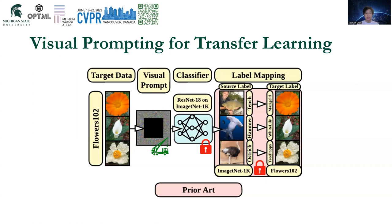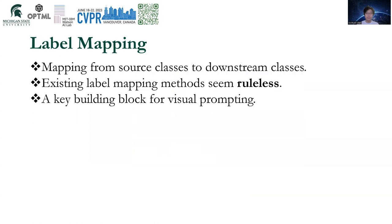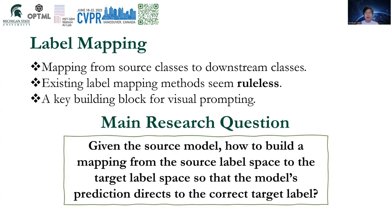Second, the prediction logics of downstream images are mapped from the source labels domain to the downstream label domain by a hard-coded mapping function. In previous work, this function seems rule-less. For example, the most used technique is random label mapping. Since label mapping is a key building block for visual prompting while having the explainability downside, we raise our main research question: given the source model, how to build a mapping from the source label space to the target label space so that the model's prediction directs to the correct target label.